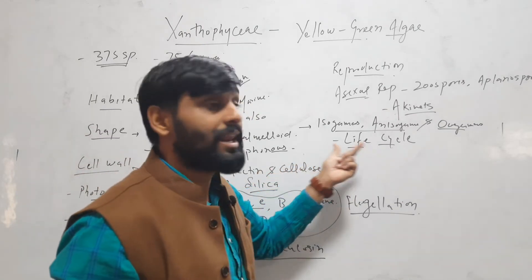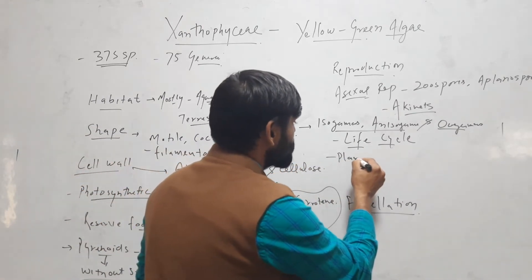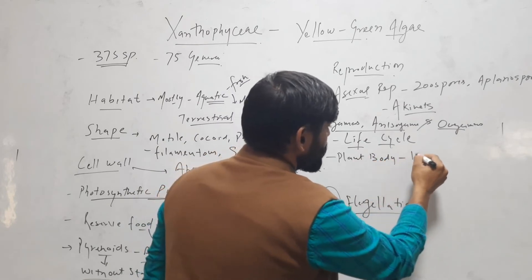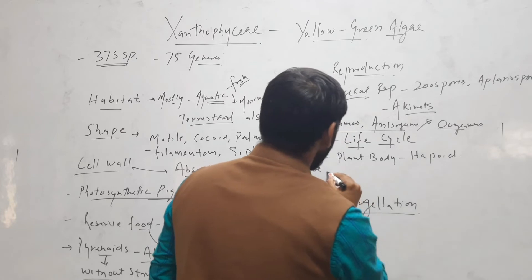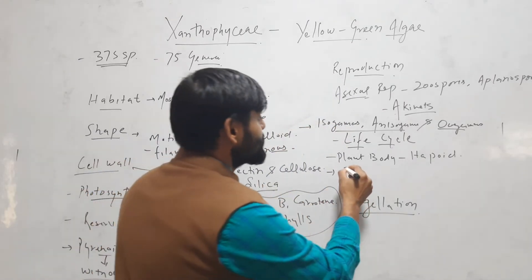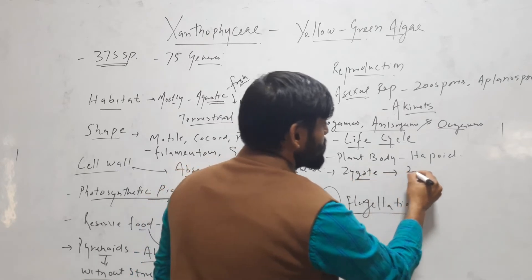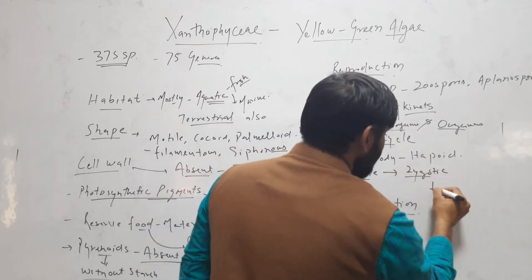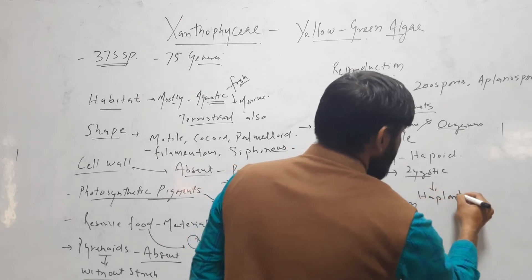When we talk about the life cycle, the plant body is haploid. The only diploid structure found in the life cycle is the zygote, and meiosis is zygotic. So the life cycle is haplontic.